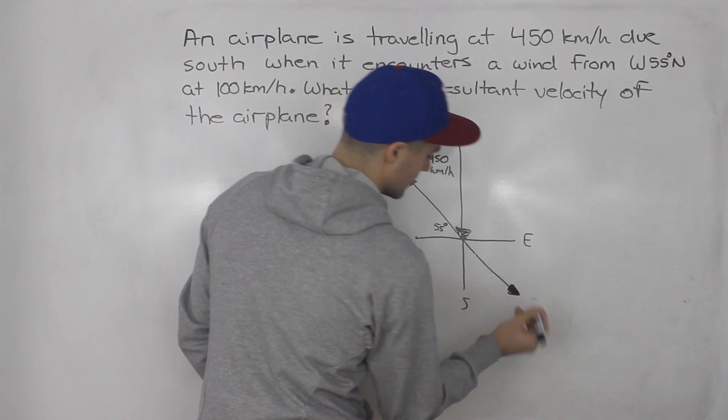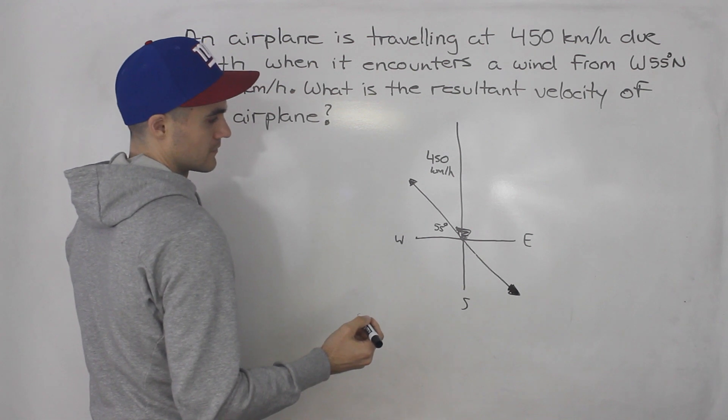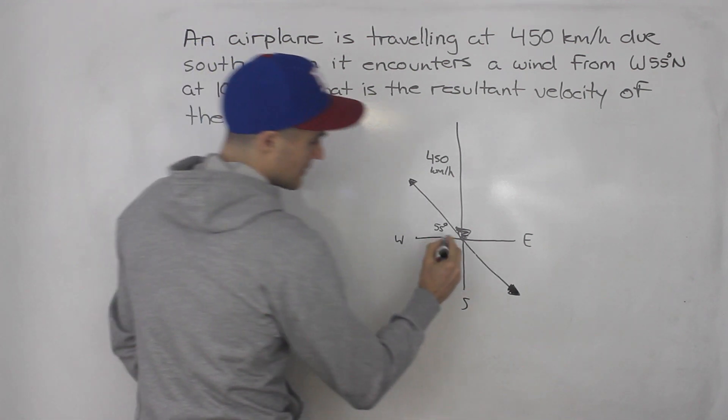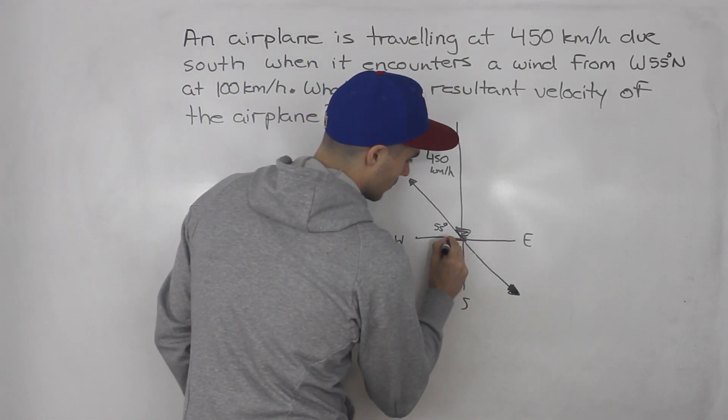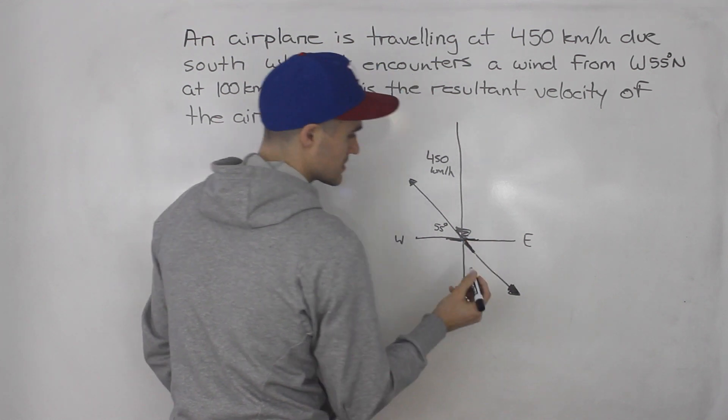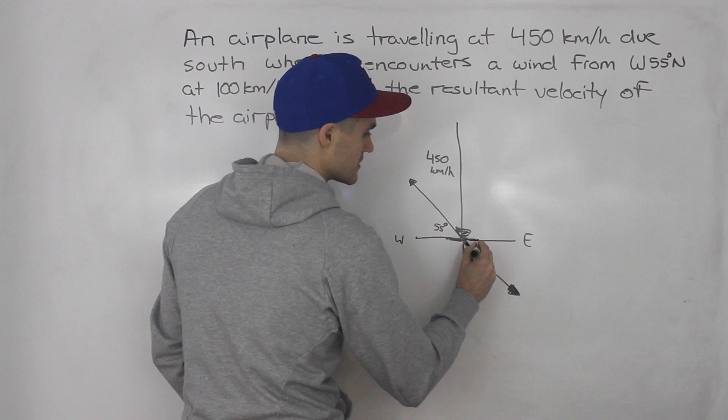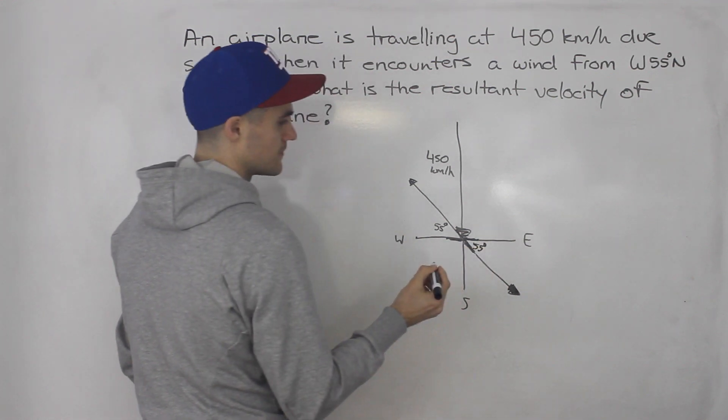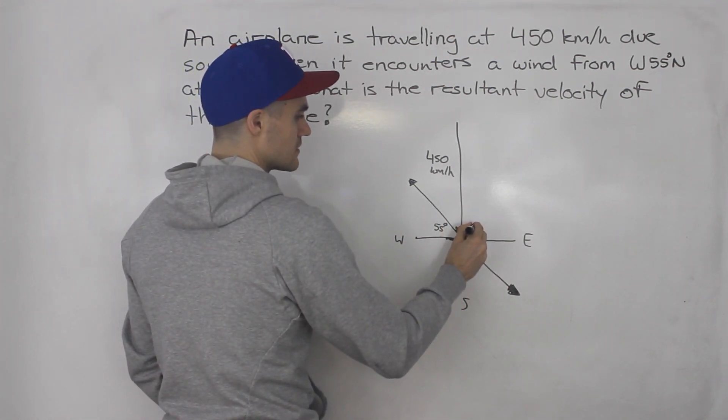Alright, like that. And now notice with the z pattern, this angle is 55, which means that this angle over here is 55 as well. So this here is 55 degrees, and then this here is 90 degrees.